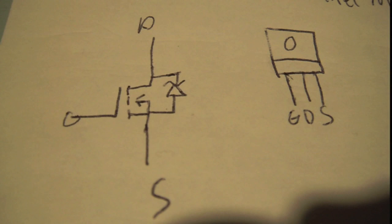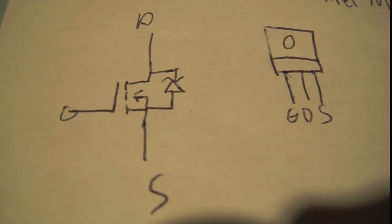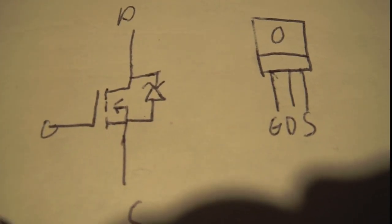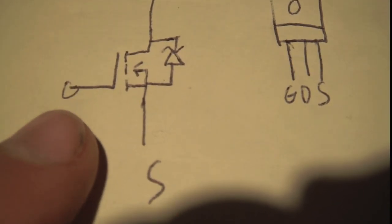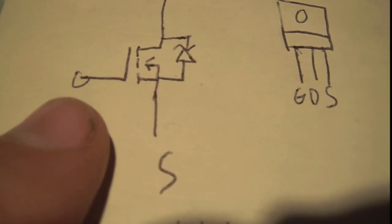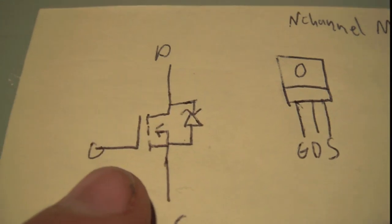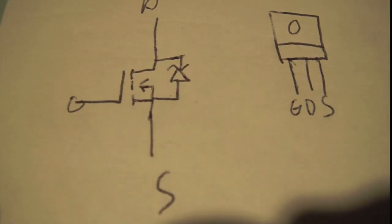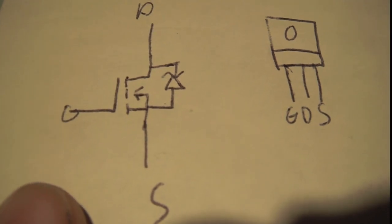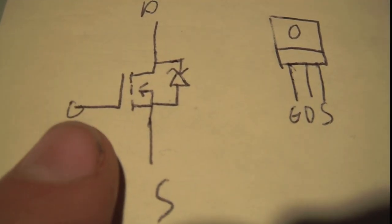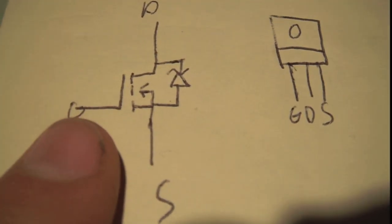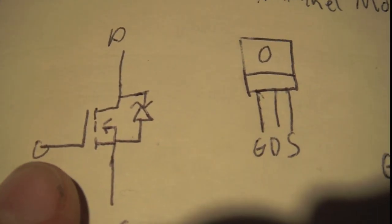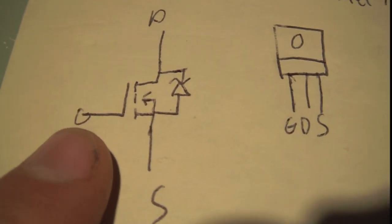The main difference between MOSFETs and BJTs — BJT being a bipolar junction transistor — is that on a bipolar junction transistor, the base, which is the gate's functional equivalent, is controlled by a current. That's why you always see a current limiting resistor. In the MOSFET's case, the gate is controlled by a voltage, not a current.